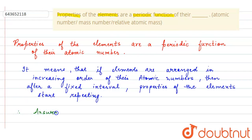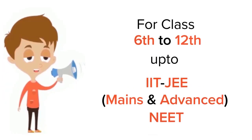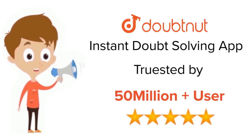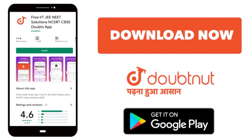The answer is atomic number. I hope you understood the explanation. Thank you. For class 6 to 12, IIT-JEE and NEET level, trusted by more than five crore students — download Doubtnut app today.